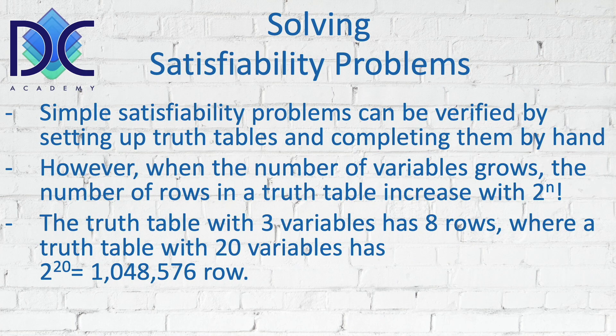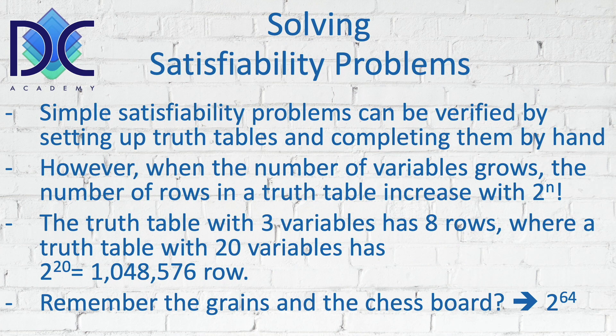A table with 20 variables has 2²⁰ = 1,048,576 rows. This is reminiscent of the old story where someone asked an emperor for one grain of rice on the first square of a chessboard, then doubling each square, reaching 2⁶⁴ — an astronomically large number. These things grow exponentially, and it is clear that solving complex satisfiability problems is only possible with powerful computers.